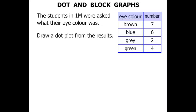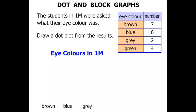Now we need to draw a dot plot from the results. Let's start with a title for the graph: Eye Colours in 1M. The various eye colours were brown, blue, grey and green. Let's draw a line across the top of those.